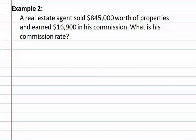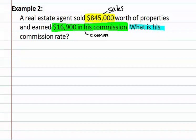In example two, we look at another commission problem in which a real estate agent sold $845,000 worth of properties and therefore earned $16,900 in commission. What is the commission rate? Once again, we must identify the different numbers. We have $845,000 worth of properties — this is the sales price or whole amount. Secondly, we see how much she earned in commission — this is the part. What is the commission rate is what we are looking for. We write that it is part equals percent times whole.